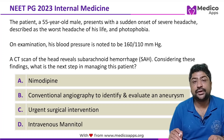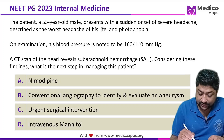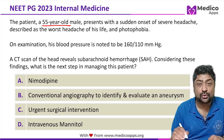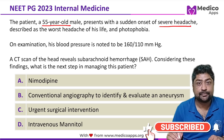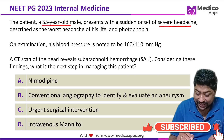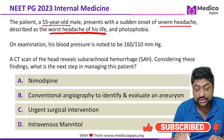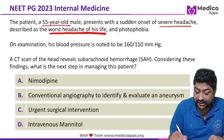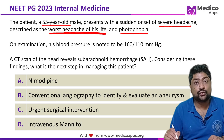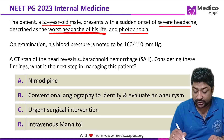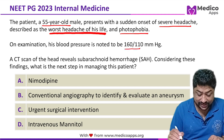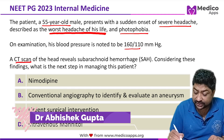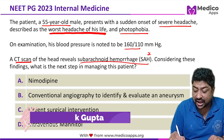This question appeared in NEET PG 2023. It describes a 55-year-old male who presents with sudden onset of severe headache — the worst headache of his life — accompanied by photophobia. Blood pressure is 160/110, and a CT scan confirms the diagnosis of subarachnoid hemorrhage.